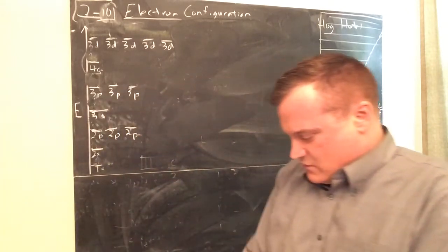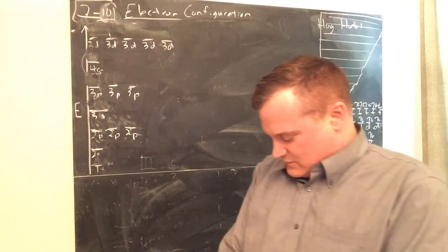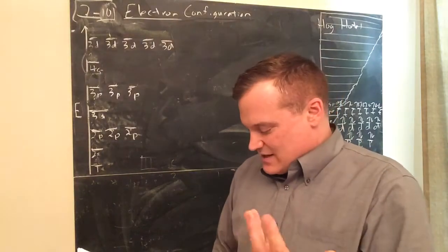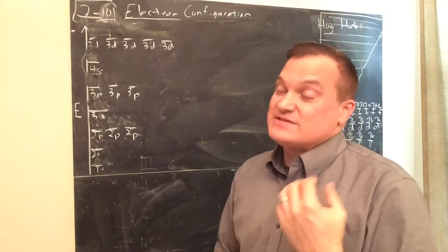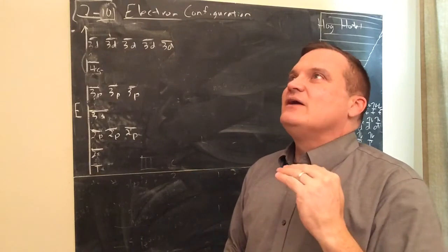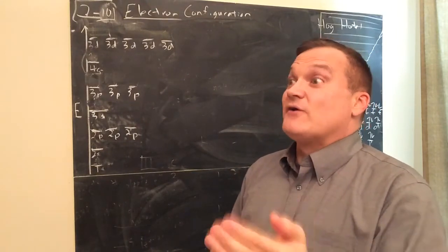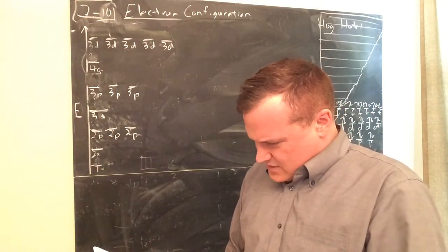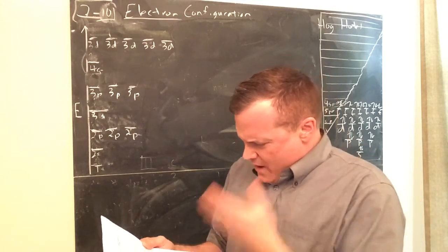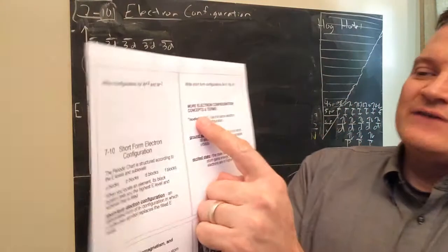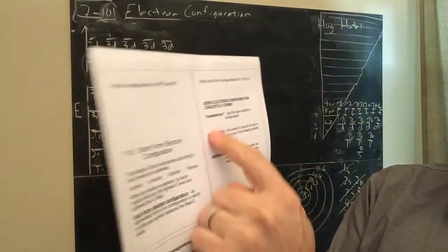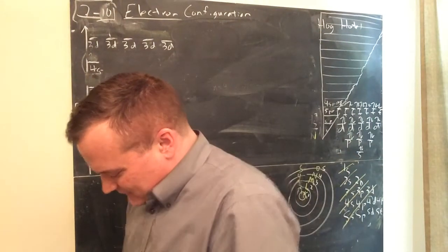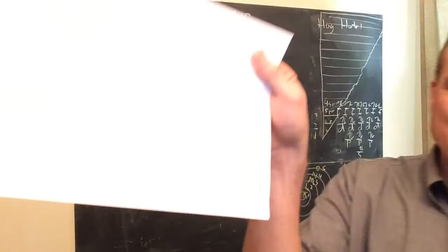I've gone over valence shell — those are the orbitals where the outer electrons are found: valence electrons. The shells are numbers one, two, three, four, or you can say the valence is specifically level three, 3p or 3s. So here we are — more electron configuration concepts. The first one is isoelectronic, and it's actually the last thing on the worksheet.